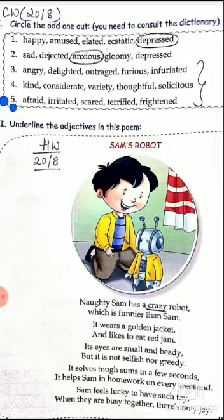So sad, dejected, gloomy, and depressed are synonyms of each other and almost mean the same, whereas anxious means worried. So the odd one out here is anxious.